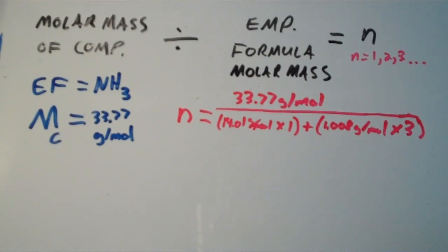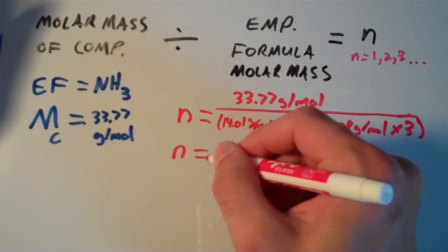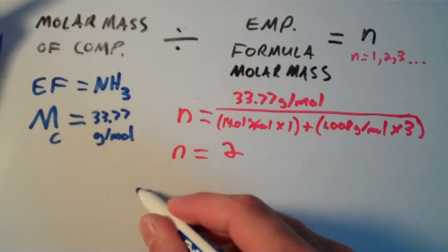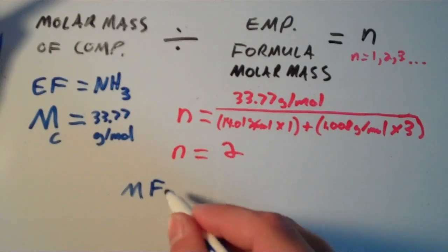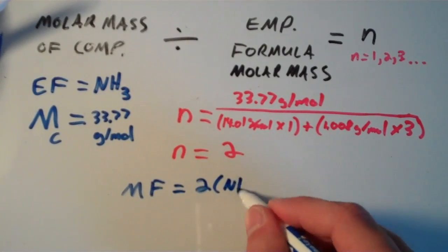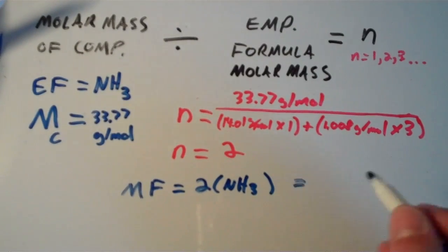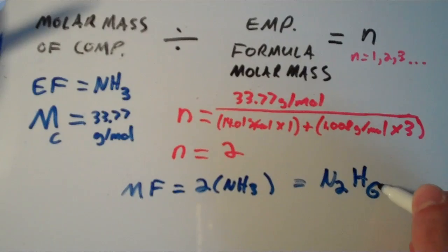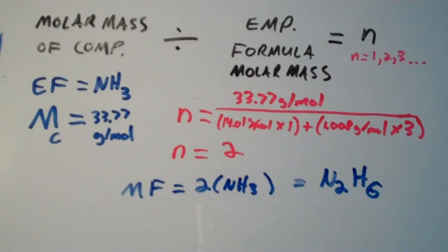Putting this into a calculator should give a whole number or close to it, and you end up getting n equals 2. So the molecular formula, MF, is n times the empirical formula — 2 times NH3 — giving us N2H6. That is how you calculate the molecular formula of a compound: you must know its empirical formula and its molar mass.